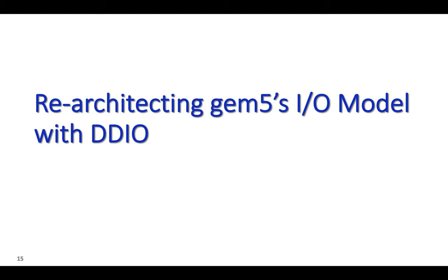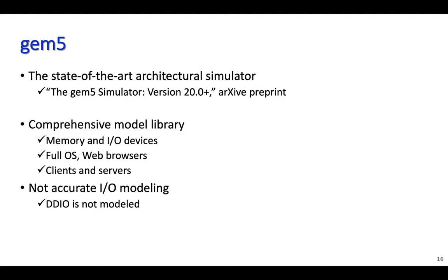Now that we saw the benefits of DDIO, let's discuss the DDIO model that we implemented in GEM5. GEM5 is a state-of-the-art architecture simulator. Jason Power recently put together a very nice paper about all the features implemented in GEM5 since the original GEM5 paper was published nine years ago — I recommend taking a look if you want to know more about the current state of GEM5. GEM5 has a comprehensive model library for CPUs, memories, and I/O devices, and can simulate a full computer system running full-fledged Linux or Android. GEM5 can be used for rapid early prototyping and gaining insights into the system.